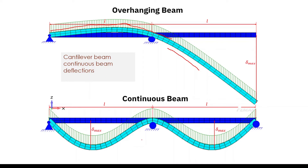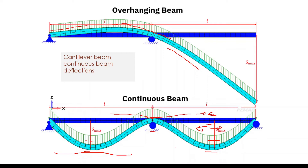If you take a continuous beam, depending on the bending moment and deflection pattern, we can decide where to provide the reinforcement. Where the beam deflects downward, the bottom is in tension and the top is in compression. At intermediate supports, the pattern reverses — tension will be at the top and compression at the bottom. So tension reinforcement is required at the bottom in mid-span and at the top near supports.